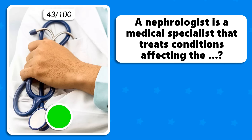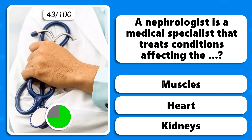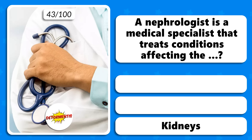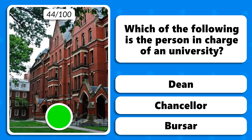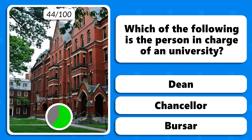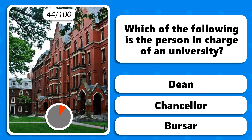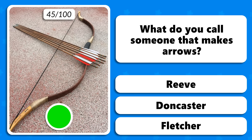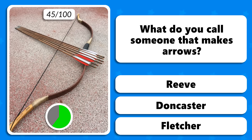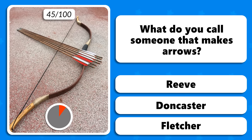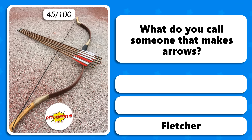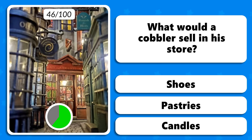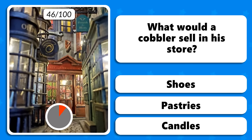A nephrologist is a medical specialist that treats conditions affecting the muscles, heart or kidneys? The answer is kidneys. What would a cobbler sell in his store — shoes, pastries or candles? Shoes.